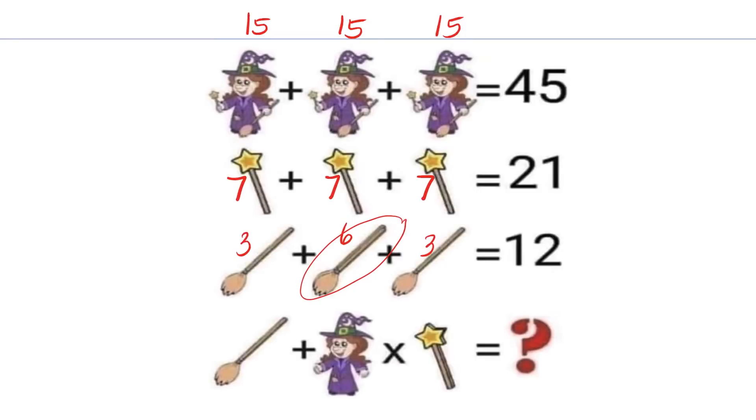Before we continue with line 4, let's go back first to line 1. For line 1, we know that each figure is 15. And the witch is holding a wand and a broom. And we know that each wand is worth 7 and each broom is worth 3. So 7 plus 3 is 10. This means that the witch value is 5.